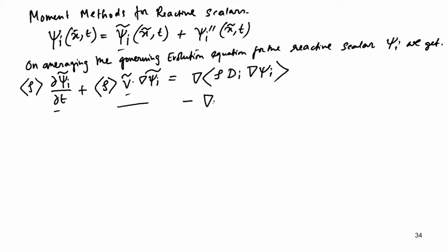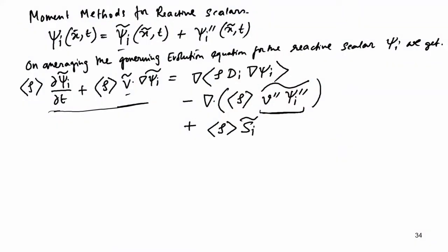The real problem of averaging the reactive scalar starts here. Similar to Reynolds stress terms, there is a covariance of the velocity fluctuation and the reactive scalar fluctuation. This term is not closed. You have a governing equation for V-tilde from the momentum equation, but you do not have a governing equation for this covariance. When you average again, you land up with an equation for the covariance of V-prime and xi-prime.